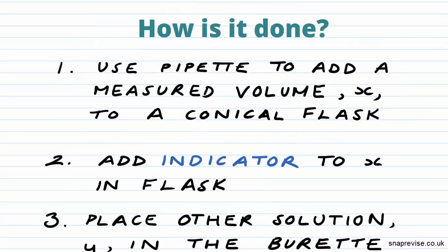So how is titration done? Well, let's break it down into steps. First of all, you'd use a pipette to add a measured volume of X to a conical flask. Then you would add an indicator to X in the flask.